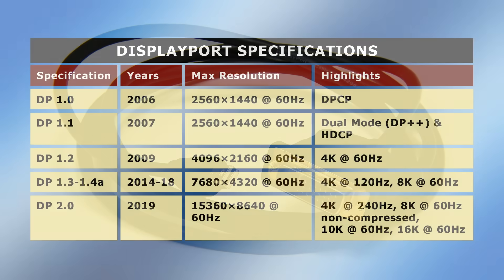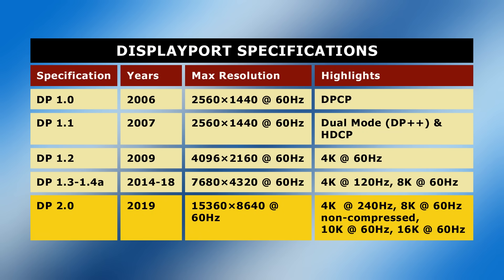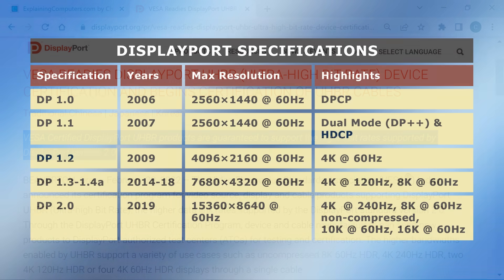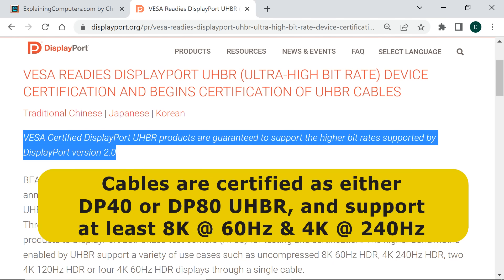DisplayPort has been constantly upgraded, with higher resolutions and frame rates delivered ahead of HDMI. For example, DisplayPort 1.2 offered 4K at 60Hz back in 2009. 8K arrived in 2014, and 16K in 2019 with DisplayPort 2.0. In 2022, VESA launched a new certification called DisplayPort UHBR or Ultra High Bit Rate, certifying cables as either DP40 or DP80 UHBR, with even the lowest standard supporting 8K at 60Hz and 4K at 240Hz.